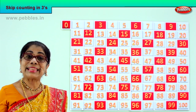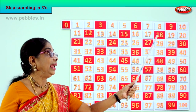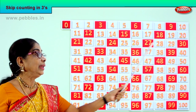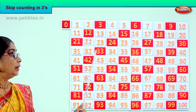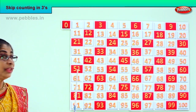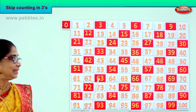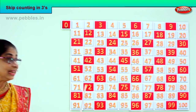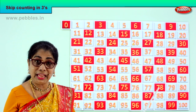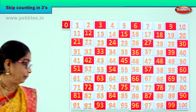Let's look at the pattern in skip counting in threes. Say with me: 0, 3, 6, 9, 12, 15, 18, 21, 24, 27, 30, 33, 36, 39, 42, 45, 48, 51, 54, 57, 60, 63, 66, 69, 72, 75, 78, 81, 84, 87, 90, 93, 96, 99. Look carefully at the pattern.